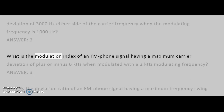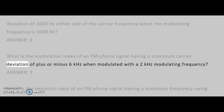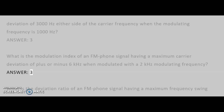What is the modulation index of an FM phone signal having a maximum carrier deviation of plus or minus 6 kHz when modulated with a 2 kHz modulating frequency? Answer: 3.